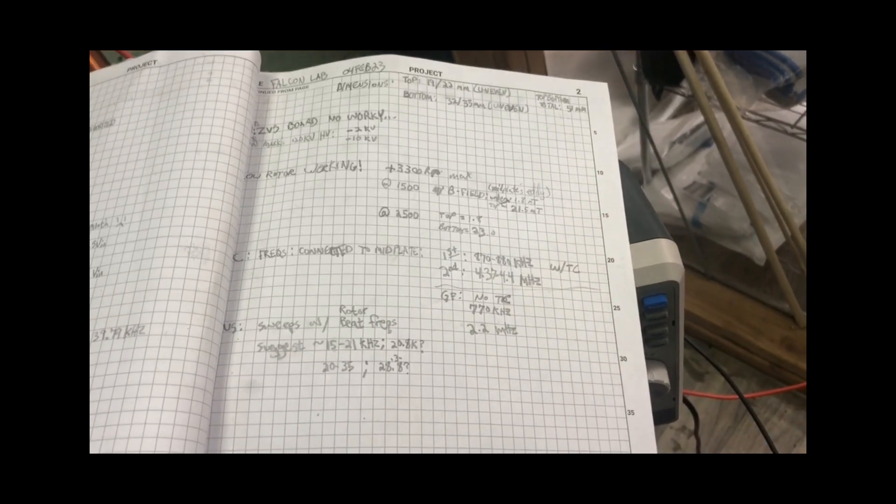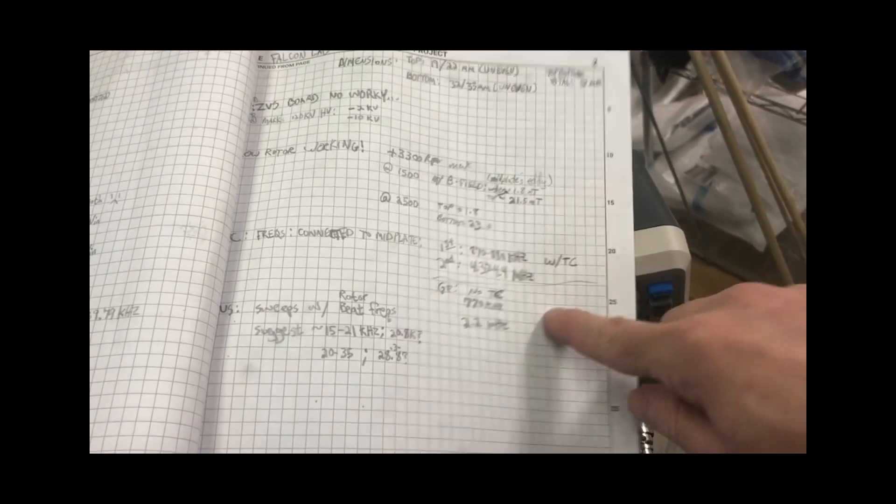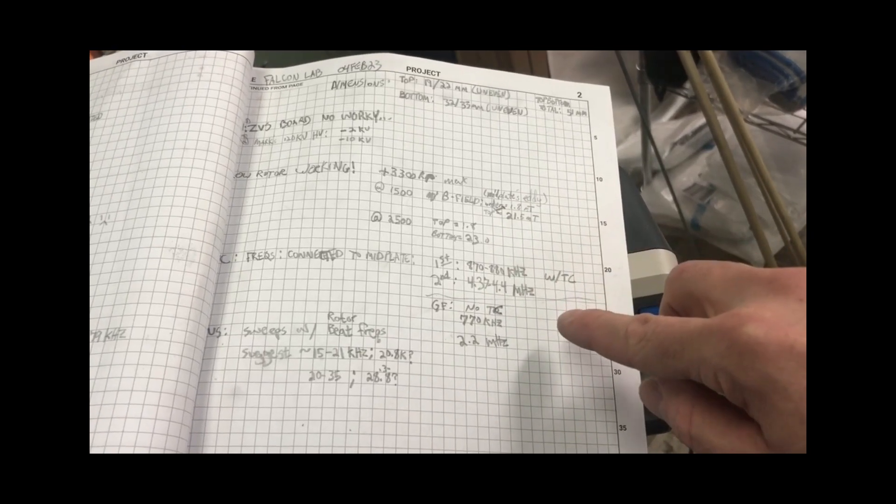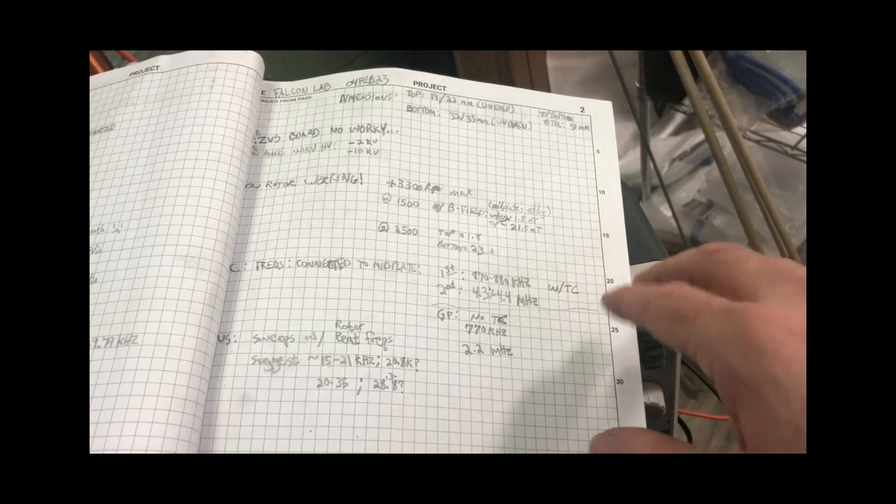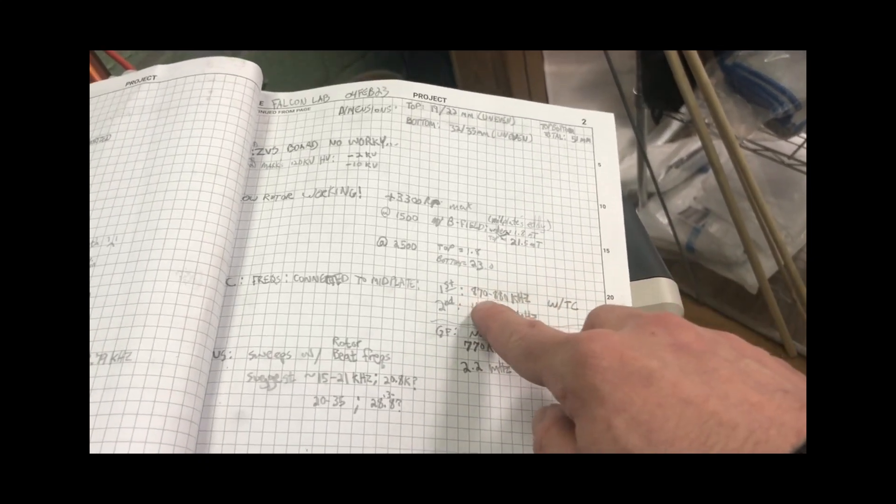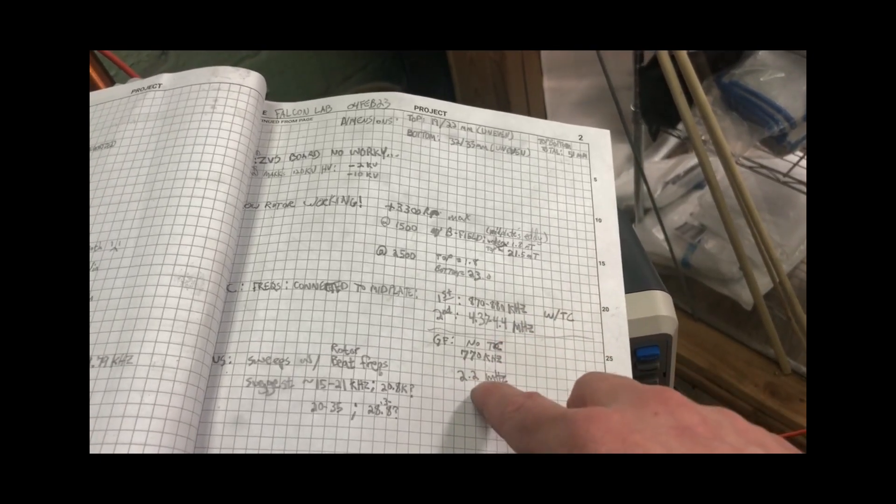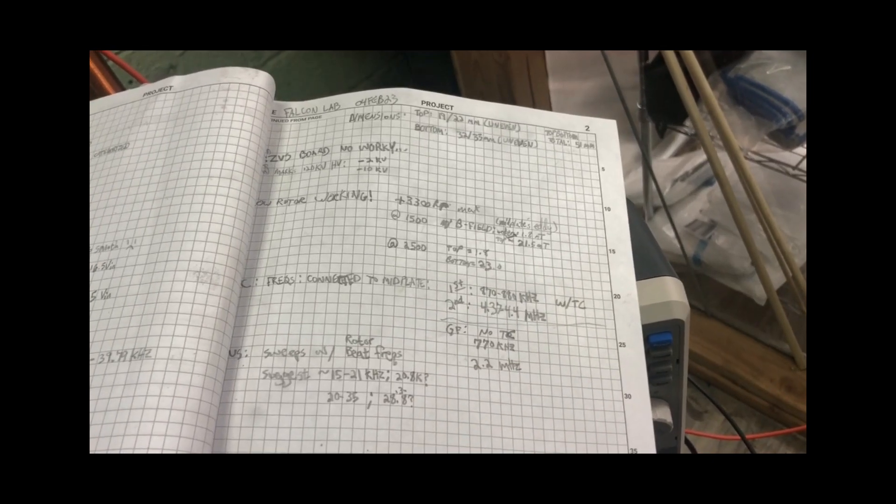So I think he wound his coil pretty darn close within 100 kilohertz of the total resonance of the whole setup. Adding in the gravel flyer only adds in 100 kilohertz for the first mode. But it's interesting that it doubles the second mode frequency. It's probably something worth looking into as well.